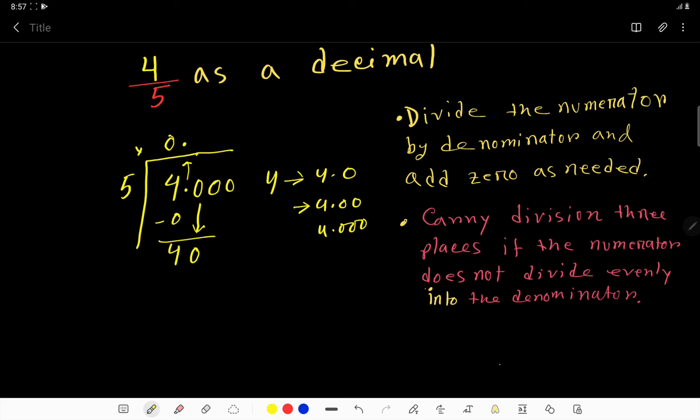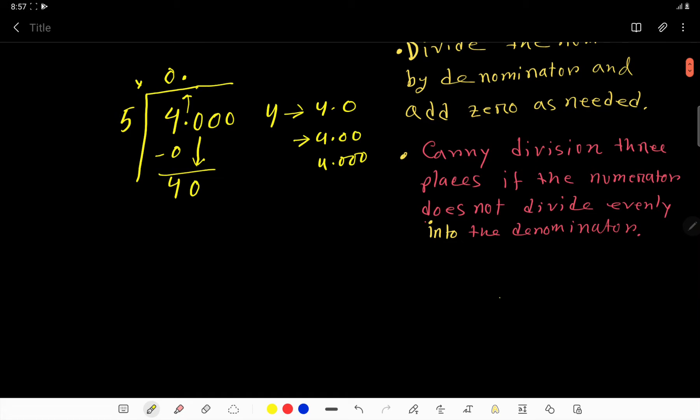Now we have to determine 5 goes into 40 how many times, so we need multiplication table. 5 times 1 gives us 5, 5 times 2 gives us 10. Just add 5 with this 5, then you will get 10. Then 5 times 3 is 15.